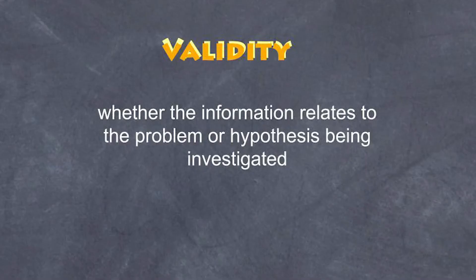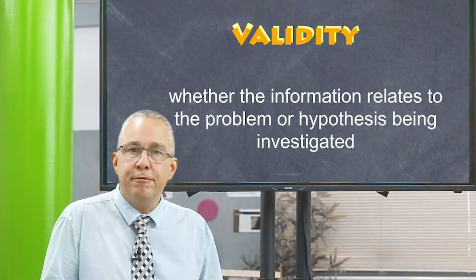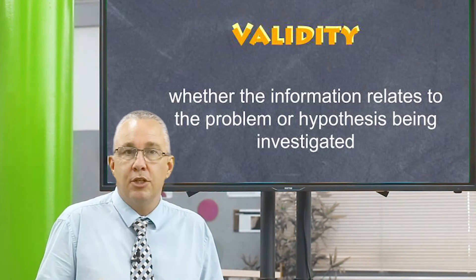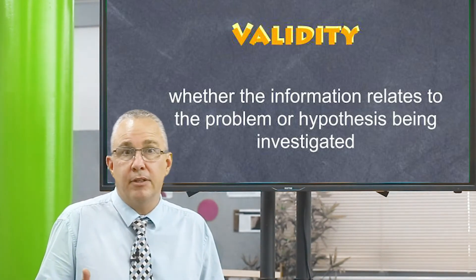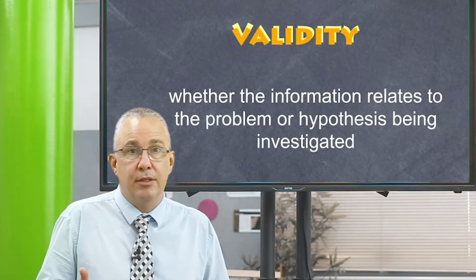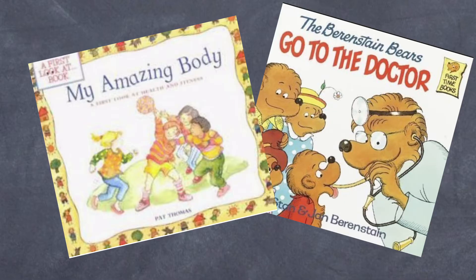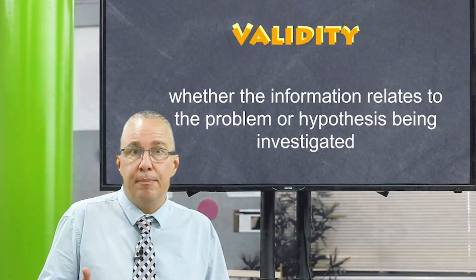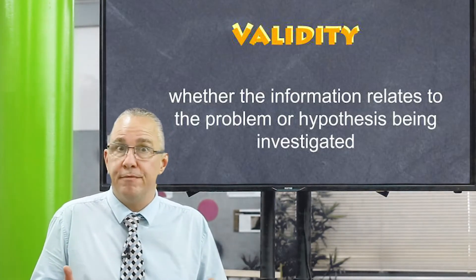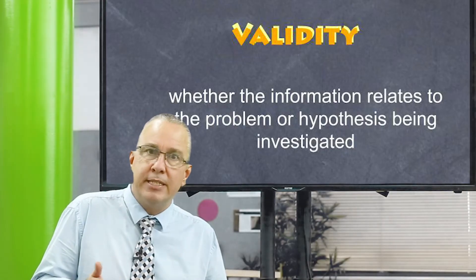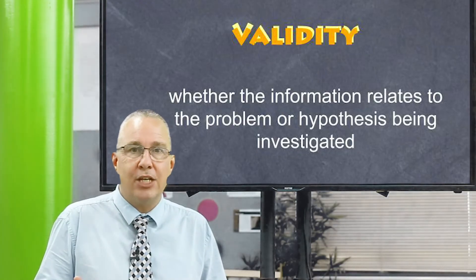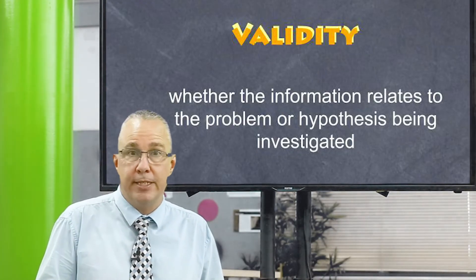The first thing is validity. In essence, it simply means: is the information you're researching actually relevant to the topic that you're investigating? So let's say you're researching the various factors that affect rates of cancer. You're not going to pick up a book written for a year one student on health — it's not valid. Equally, you're not going to pick up a biology book looking at bacterial pathogens and how they cause infectious disease, because when you're investigating cancer, you're looking at a non-infectious disease. So it's important that the information you're gathering actually answers some of the questions you have in your investigation.